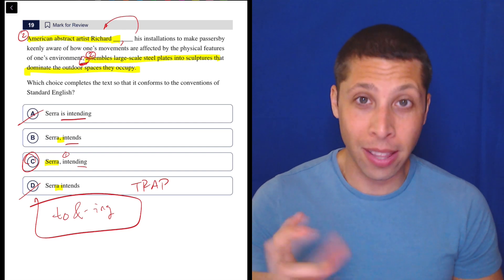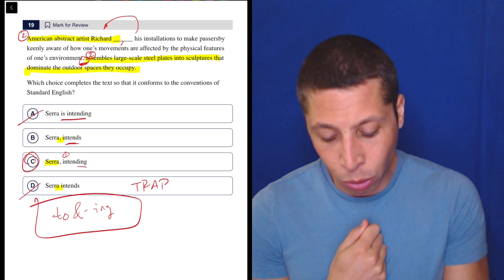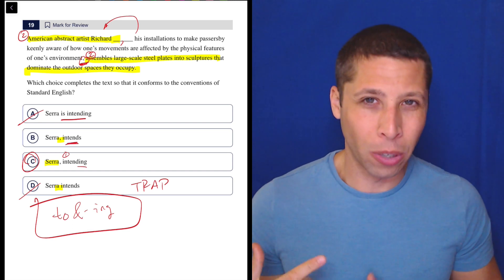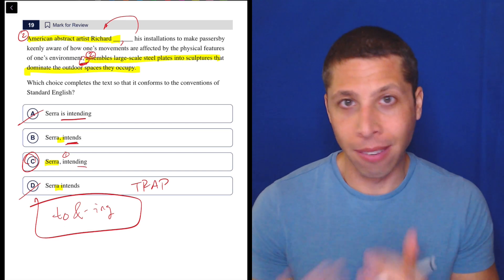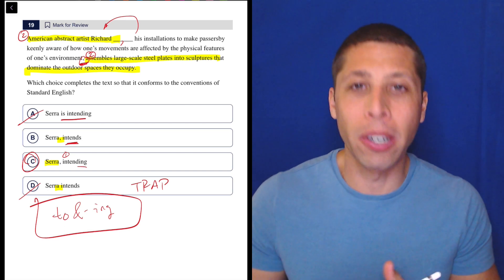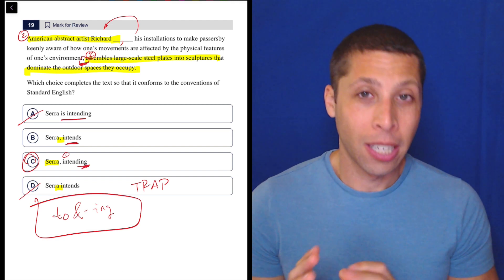Notice that if we did the same thing that I just did and kind of flipped the order with choice B, it would sound terrible. We couldn't really start the sentence with the word intends because that is a present tense verb that needs a subject, and we've lost it if we move it around or put it in some sort of interruption.